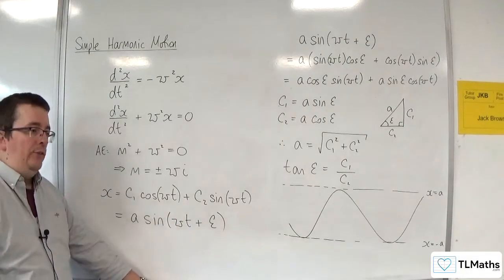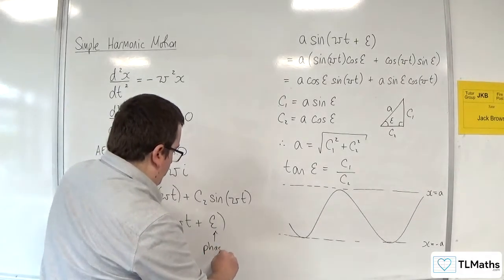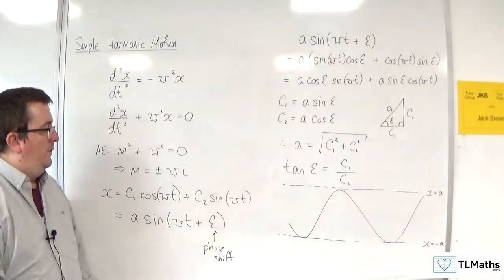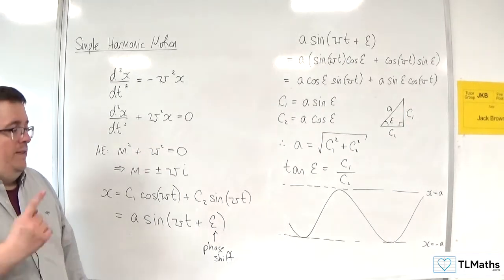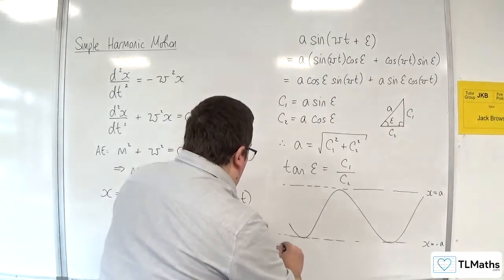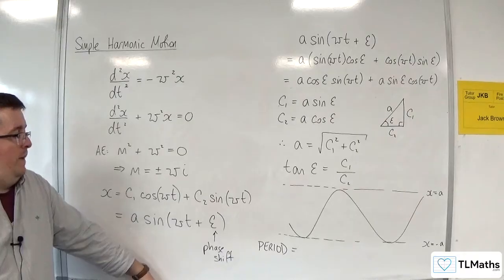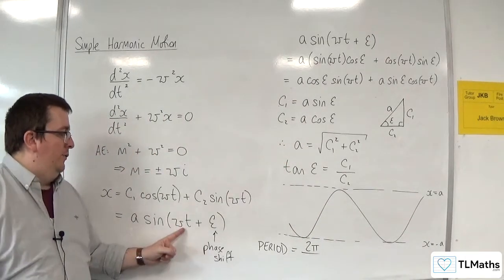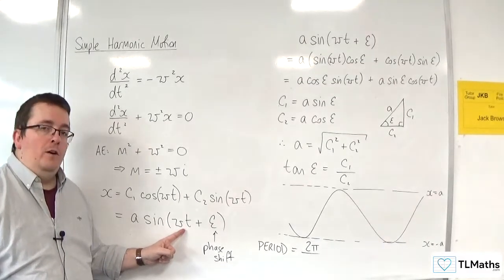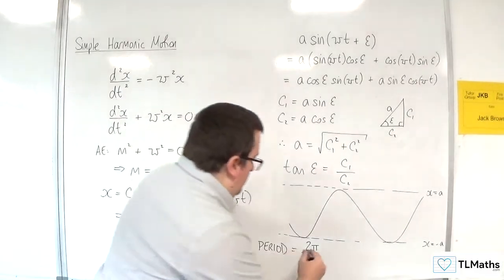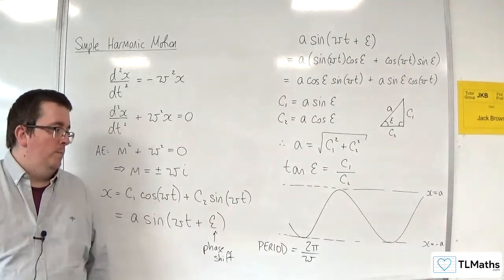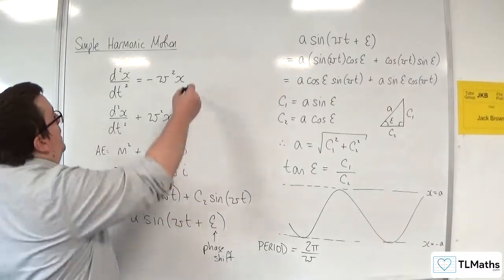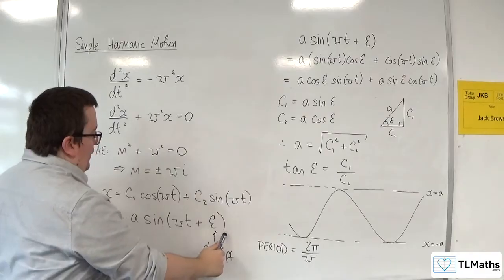Epsilon is referred to as the phase shift. What we mean by that is essentially it is what the curve is translated by, left or right, depending on the situation. And the other thing to note is this function's period — the fact that it is periodic. Sine has a period of 2π, and it is being stretched parallel to the t-axis by a factor of omega. So the period would be 2π over omega. This is where simple harmonic motion is coming from — the fact that this second-order differential equation has this as its general solution, and that this describes many different oscillating situations.